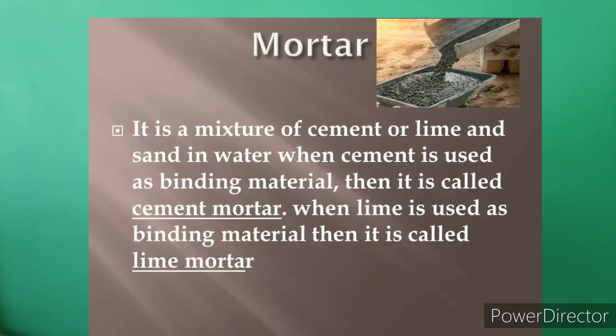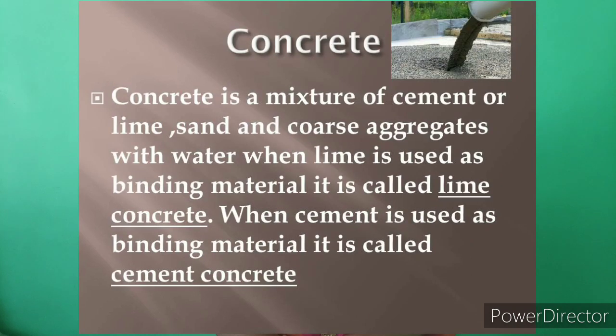Mortar is the mixture of cement or lime and sand in water. When cement is used as the binding material it is called cement mortar; when lime is used it is called lime mortar. Concrete is a mixture of cement or lime, sand, and coarse aggregate with water — called lime concrete or cement concrete depending on the binding material.